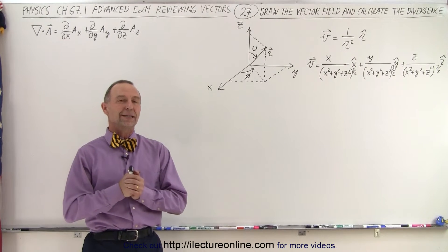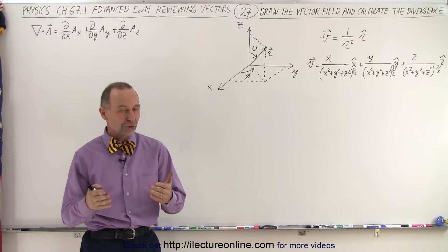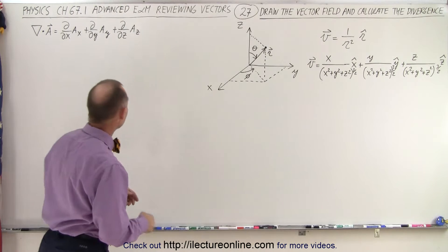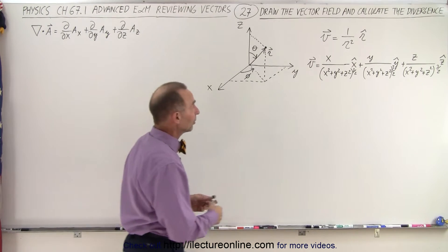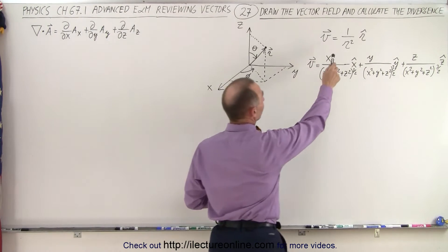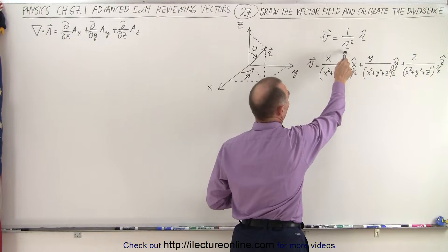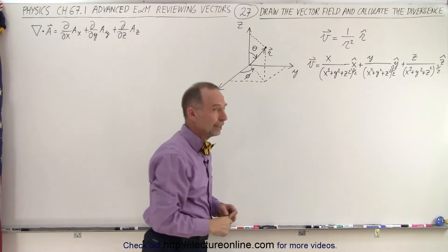Welcome to our lecture online. Now let's find the divergence of this function. In spherical coordinates, it looks fairly simple. The vector function equals 1 over r squared times the r unit vector.